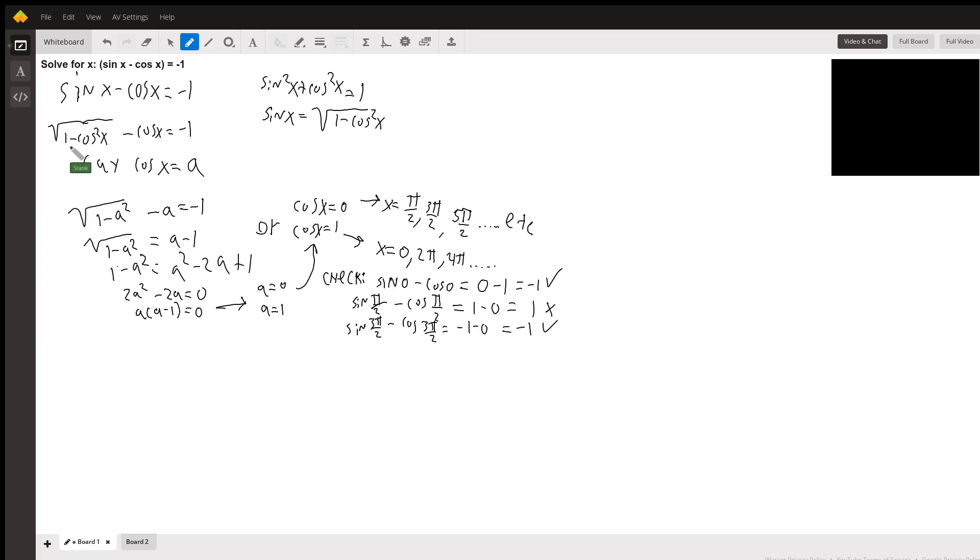So we get square root of one minus cosine squared x minus cosine x equals minus one. And now we're just going to do a simple substitution to make things a little easier.